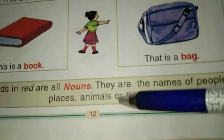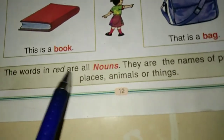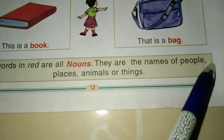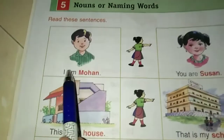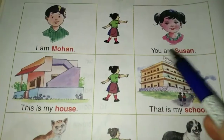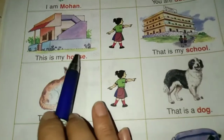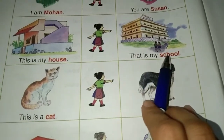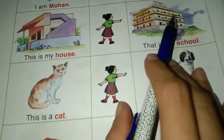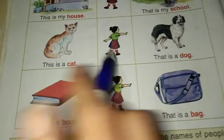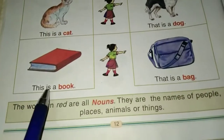On page number twelve of your grammar textbook, the words in red are all nouns — they are names of people, places, animals, or things. Let us read them: I am Mohan, you are Susan. He is a boy, she is a girl. This is my house, that is my school. This is a cat, that is a dog. This is a book, that is a bag. So nouns are the names of persons, places, animals, and things.